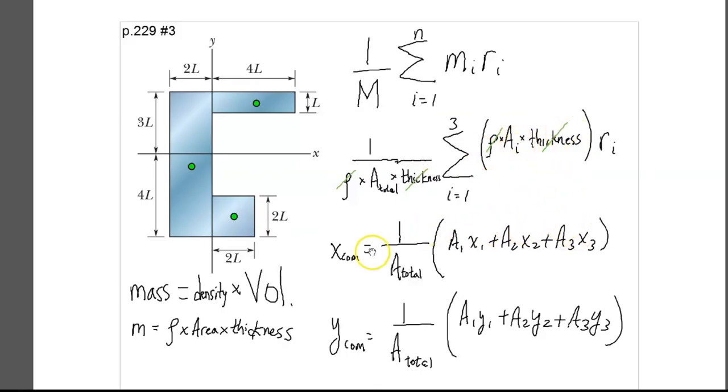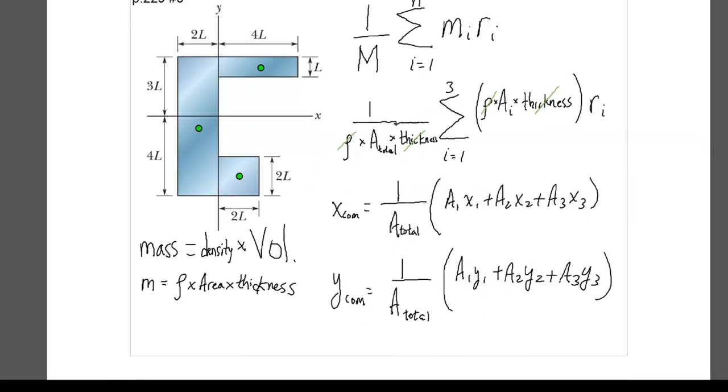So I've simplified this equation now that we've canceled some things out, and here's how we'll calculate our x_com, and here's how we'll calculate our y_com. Notice that in the X equation, we're using the X value for the coordinate, and for the center of mass in the Y, we're using the Y value of the coordinates of the locations of these dots. So now let's plug in some numbers.